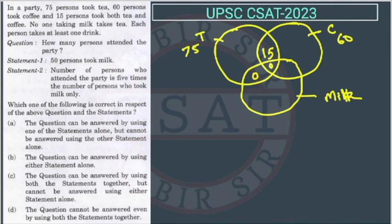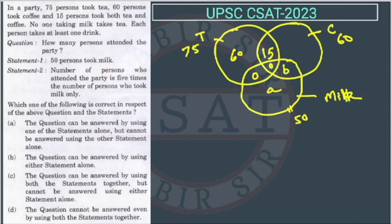Now we have to find how many persons attended the party. Statement 1 says 50% took milk. If 50% took milk, and if the overlap between milk and coffee is B, and the milk-only region is A, then the coffee-only region will be 60 minus 15 minus B, which is 45 minus B. Since A plus B is 50, A will be 50 minus B.